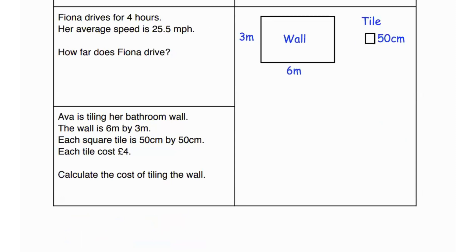Next question says Fiona drives for four hours. Her average speed is 25.5 miles per hour. How far does Fiona drive? Distance equals average speed times time. Speed is 25.5 and time is 4. So we multiply both the quantities and what we get is 102 miles as the distance.